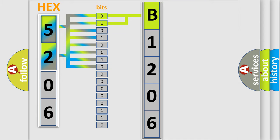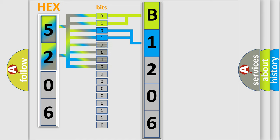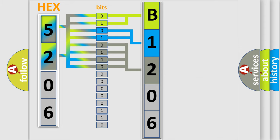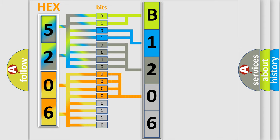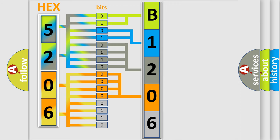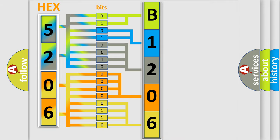The next two bits again determine the second character. The last bits of the first byte define the third character of the code. The second byte is composed of a combination of eight bits. The first four bits determine the fourth character of the code, and the combination of the last four bits defines the fifth character. A single byte conceals 256 possible combinations.